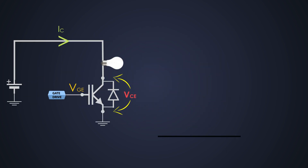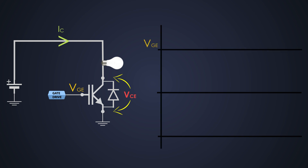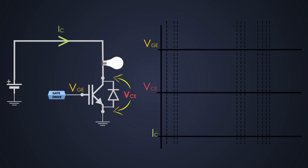We will see how an IGBT turns on and turns off, and what happens with VGE, collector current, and collector-to-emitter voltage. We will divide its operation into different time durations. We provide gate-to-emitter voltage to the IGBT; the VGE rises and reaches 10% of its maximum magnitude. For example, if the gate-to-emitter voltage is 15V, then this value would be 1.5V. We will call this time T0.